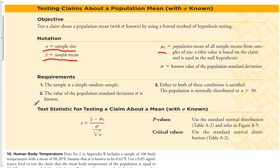The requirements to test claims about a population mean with sigma known are the same as for creating a confidence interval for means when sigma is known. First, the sample must be a simple random sample. Second, we need to know the population standard deviation — otherwise we can't use the z-test statistic. Third, either the population is normally distributed or the sample size is greater than 30.